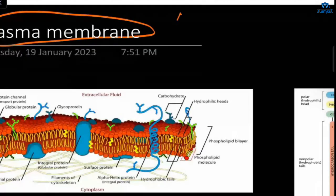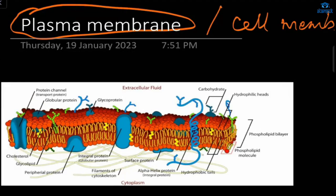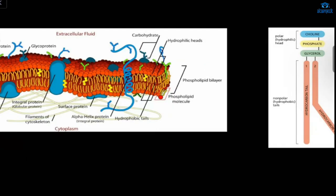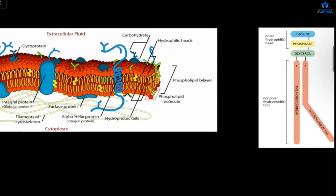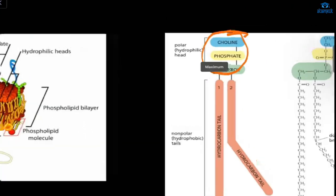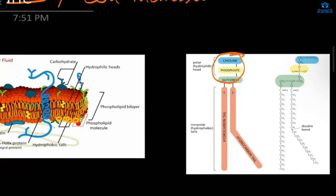Now this is also known as cell membrane. Here is the structure of plasma membrane. The plasma membrane is made up of phospholipid bilayer. This part is head, hydrophilic head. That means this part loves water.